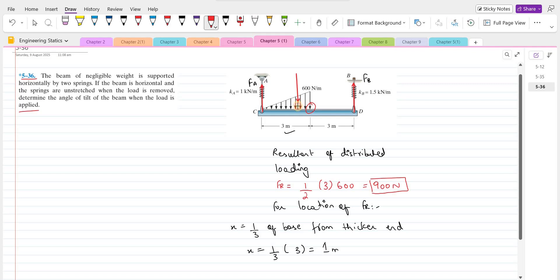So this is the location of the resultant of this distributed load. This distance is 1 meter and the magnitude of the resultant force is 900 Newtons.